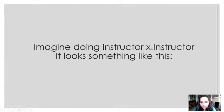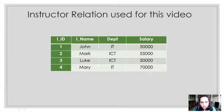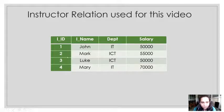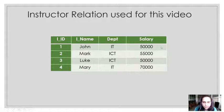Now imagine that you want to do instructor cross instructor, meaning you want to take a Cartesian product of instructor with itself. It would combine four rows of the instructor relation with the same four rows, giving you totally 16 rows. The number of columns will be four from each, giving you totally eight columns.